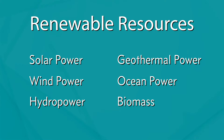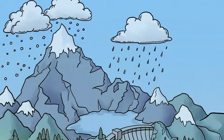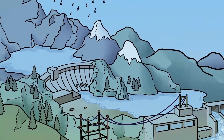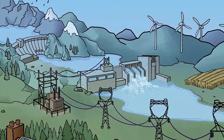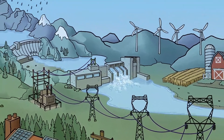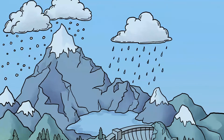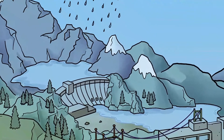A renewable resource is a natural resource from the earth that never gets used up. With hydropower, that source is water. Our source of water is replenished over and over again through natural processes — in this case, the water cycle. Rain and snowmelt fill up rivers and streams. The water in the river runs through dams where they generate electricity. The water goes through the dam and goes right back into the river, which flows to the ocean. The sun draws moisture from the ocean through evaporation, which forms clouds. The clouds condense and moisture falls back onto the earth as rain or snow, causing the cycle to start again.